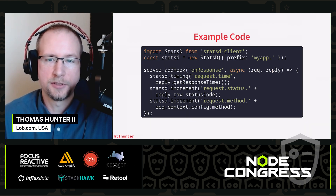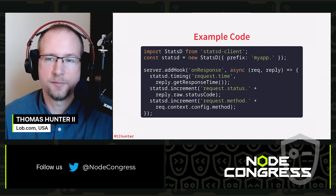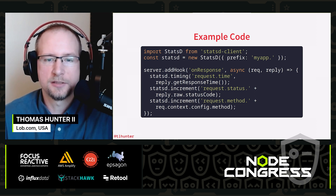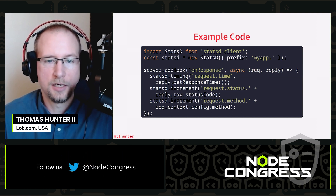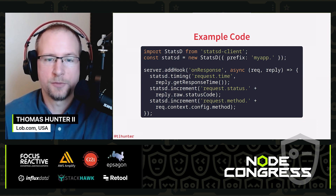Here's some example code. We're using the statsd-client package and creating a new statsd instance. We pass in some configuration — the prefix for these metrics is myapp. It's common with this pattern to prefix metrics with the application name, then separate metric names using periods to define a hierarchy. We add a Fastify middleware at the onResponse level. Here we track request timing, the status code received, and the method — so we can see the timing a request takes over time.